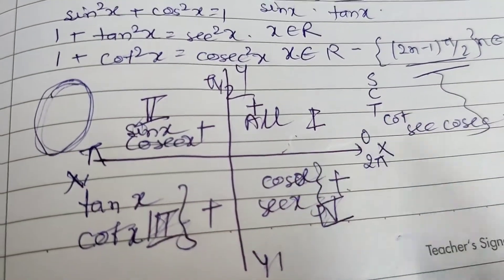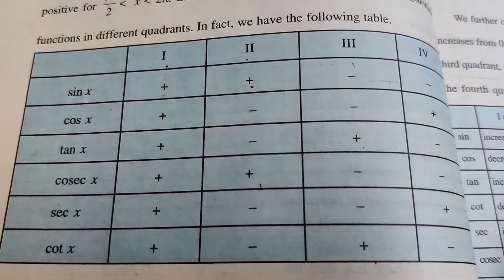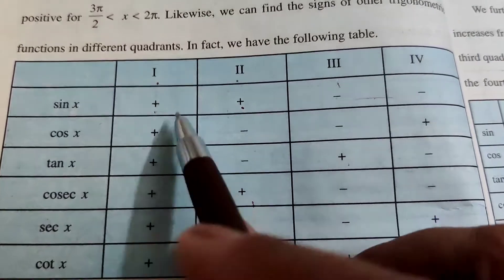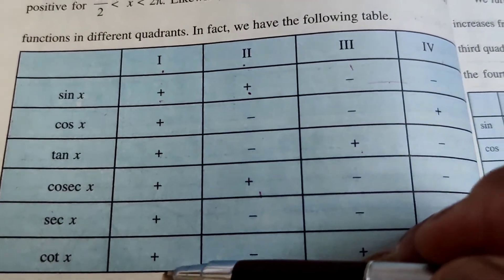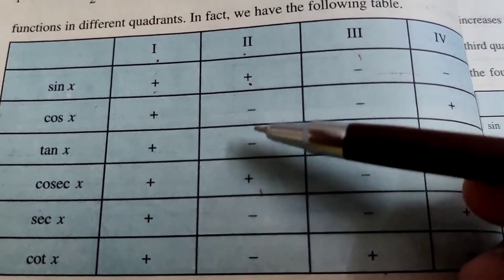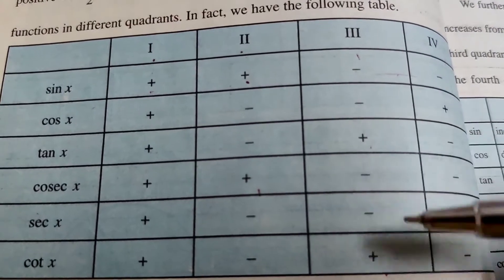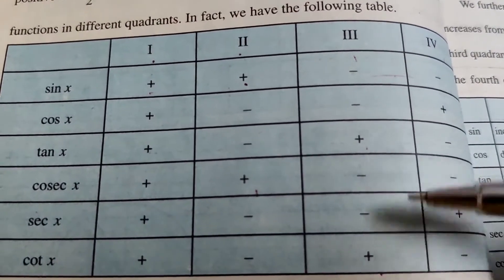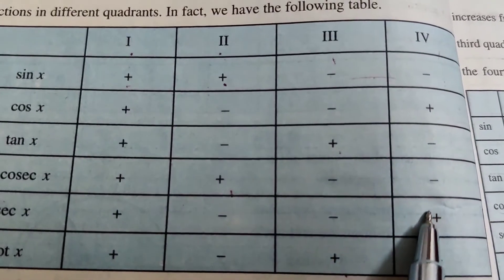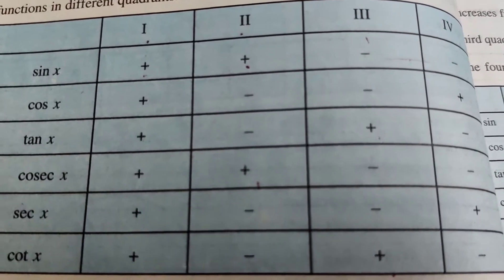In the first quadrant, all ratios are positive. This is summarized in a table: first quadrant — all positive; second quadrant — sin x and cosec x positive, all others negative; third quadrant — tan x and cot x positive, others negative; fourth quadrant — cos x and sec x positive, all others negative.